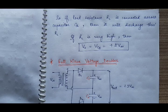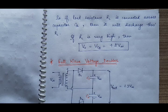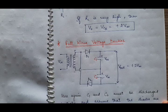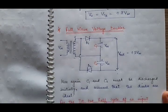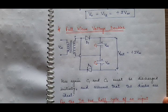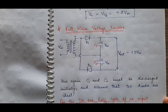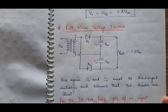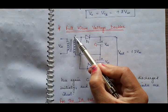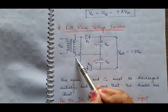Next we discuss the full-wave voltage doubler. In case of full-wave voltage doubler, the output is taken across both capacitors C1 and C2. This is the circuit of the full-wave voltage doubler — again two diodes and two capacitors since it is a voltage doubler. Both capacitors must be fully discharged initially before use, and the diodes are assumed to be ideal. During the first positive half cycle, the upper end of the secondary coil is positive and the lower end is negative.